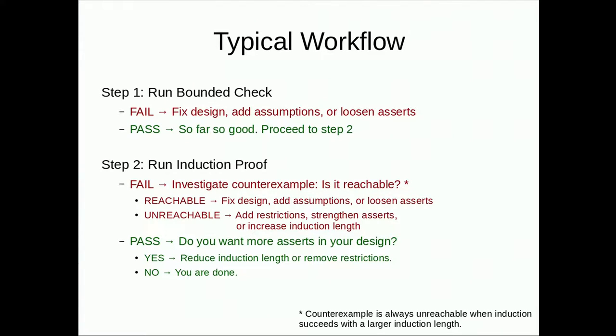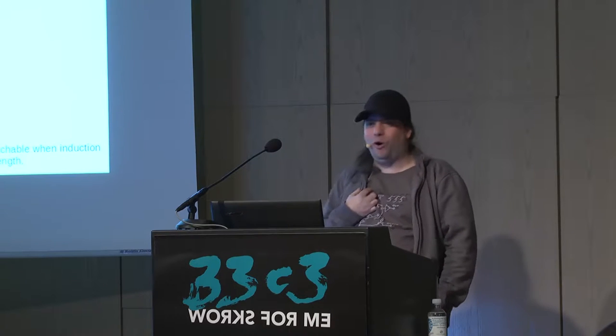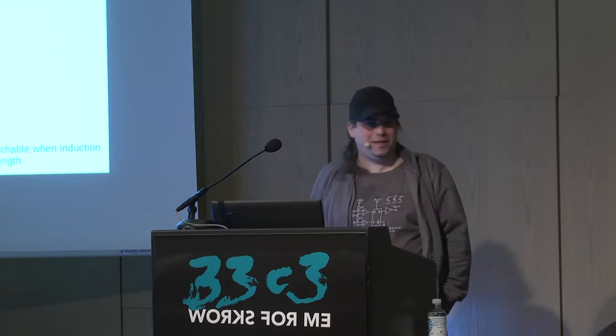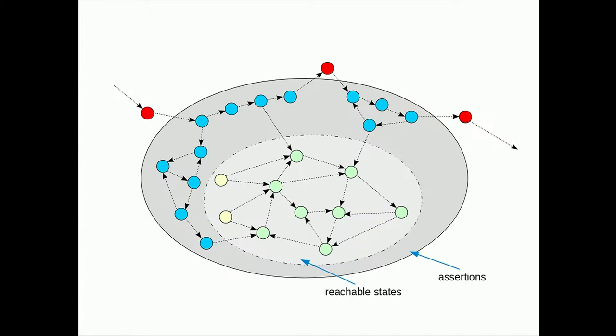If the counterexample is reachable, fix the design, add assumptions, or loosen assertions. If it's unreachable, add additional assertions telling the solver that this state is actually unreachable. That's the kind of dialogue you have with this tool — the solver gives you a counterexample, and you explain that it's not reachable because some condition will never become true. When it passes, you know everything is right. You can also reduce the induction length to get more counterexamples to guide adding assertions, knowing each counterexample is now unreachable.